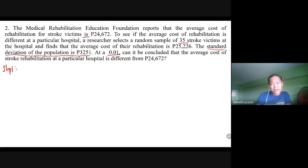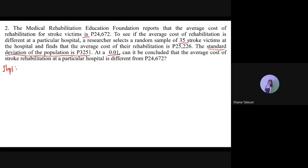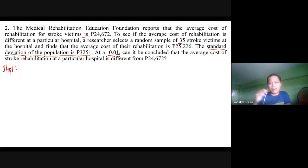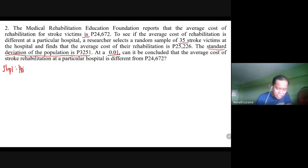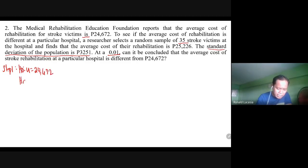The word 'is' corresponds to 'equal' in mathematics. H₀ uses equal, so the claim here is H₀: the population mean = 24,672. The alternative hypothesis Hₐ will be: population mean ≠ 24,672, since the question asks if the cost is 'different.'